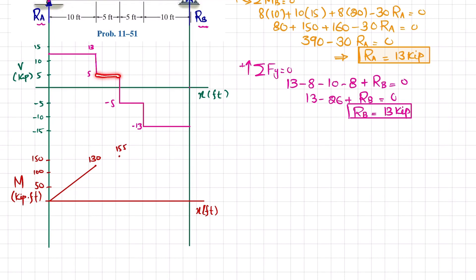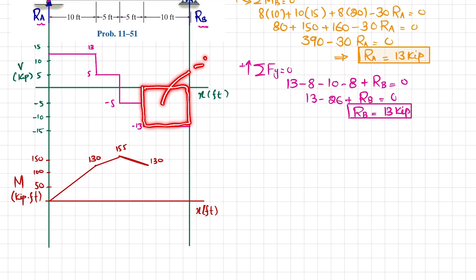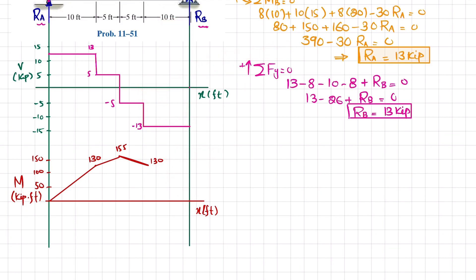Since the shear force is a horizontal line, the bending moment slope is increasing in the second segment. The third area is −25, so 155 − 25 = 130 kip-ft. In this region the shear is negative so the bending moment slope is decreasing. The last area is −13 × 10 = −130, and 130 − 130 = 0, completing the bending moment diagram.